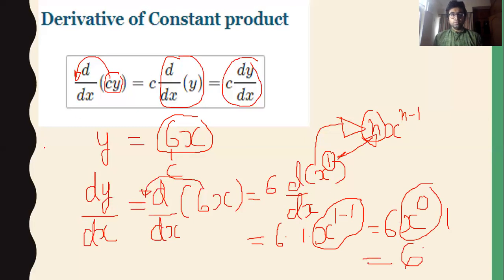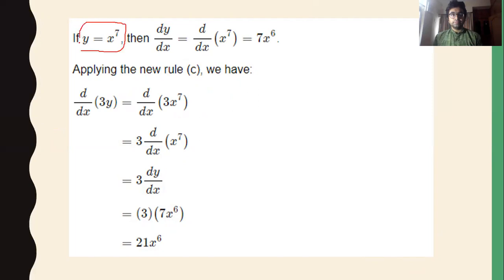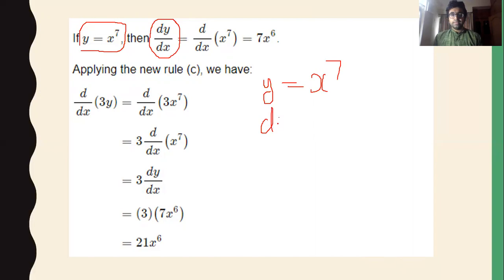This is the example where we applied the derivative of a constant product rule, which is very important in differentiation. Let us see one more example. Suppose we have y equal to x to the power 7. Applying the power rule, dy by dx equals n into x to the power n minus 1, where n is 7, giving us 7 into x to the power 6.